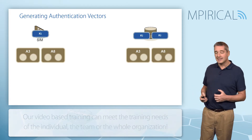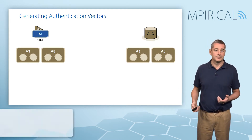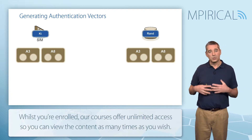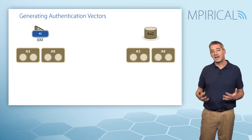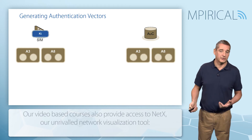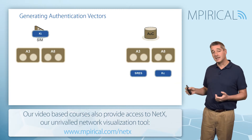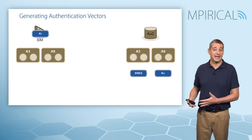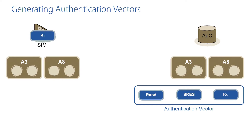Over in the AUC we take the KI value and feed it into the two algorithms A3 and A8. At the same time, the authentication center generates a random number termed RAND, which is also fed into A3 and A8. As a result, the two algorithms produce additional numbers with specific titles: SRES, the signed response, from A3, and Kc, the cipher key, generated from A8. These two numbers along with the random number used in their generation become our authentication vector — in GSM this is sometimes referred to as a triplet.